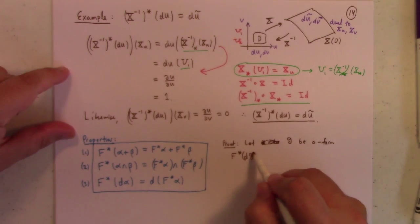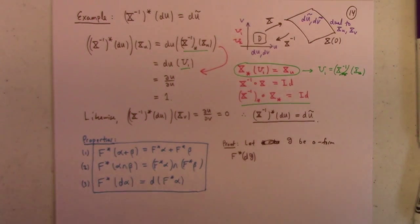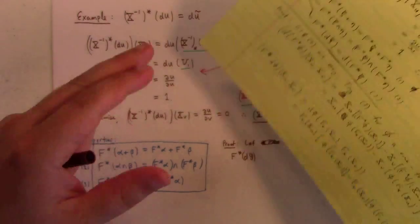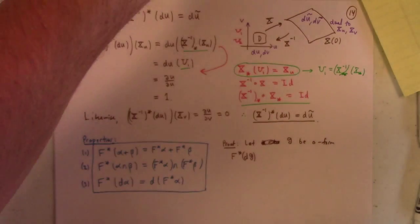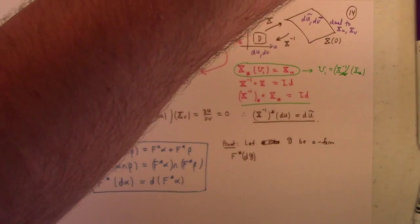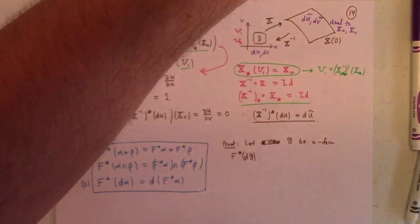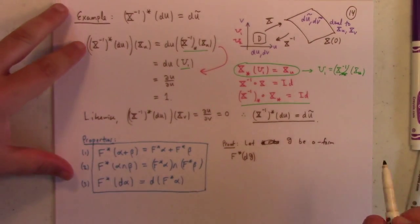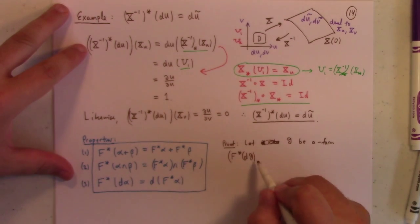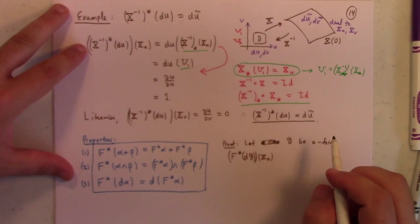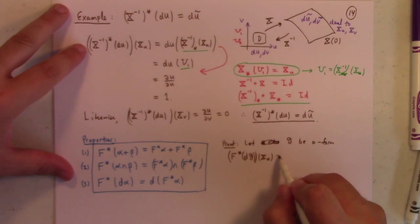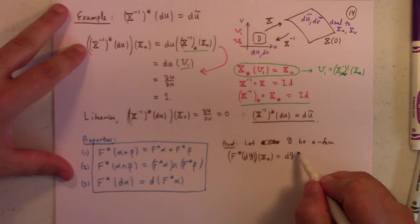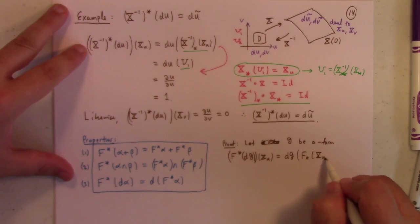So we're going to pull back under F of dG. So I want to figure out, can we show that that is equal to d of the pullback? Excuse me. Oh my paper, what is happening? Let me get my magnets. So in order to understand how one-forms behave, you let them eat vectors and see what happens. So we'll pick our favorite vector, the partial velocity x_u. Now that by definition is dG acting on the push forward under F of x_u.